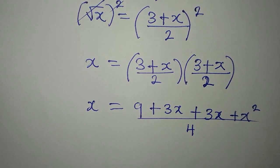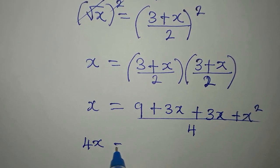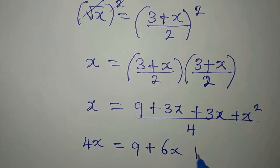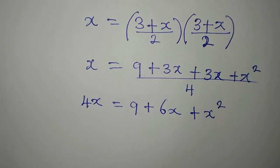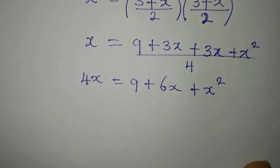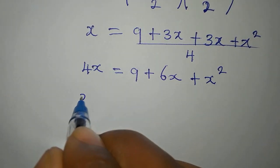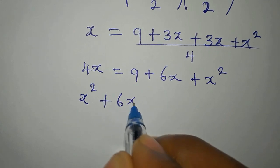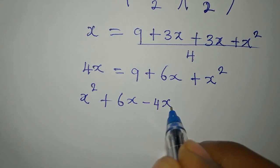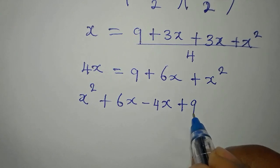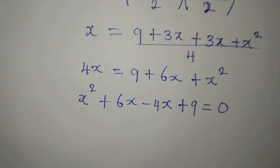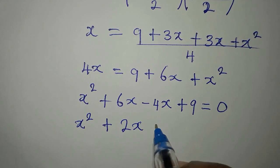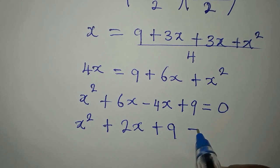The whole of this is over 4 — that is 2 times 2. We cross-multiply so that we have 4x equal to 9 plus 3x plus 3x, which is 6x, then plus x squared. Now we have a quadratic equation. Let us arrange this in better order, beginning with the highest power: x squared plus 6x minus 4x plus 9 equals zero, giving us x squared plus 2x plus 9 equals 0.